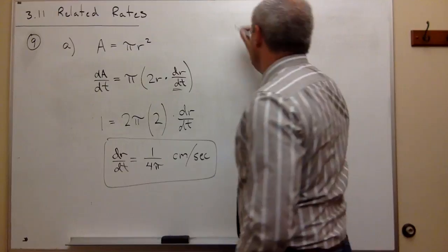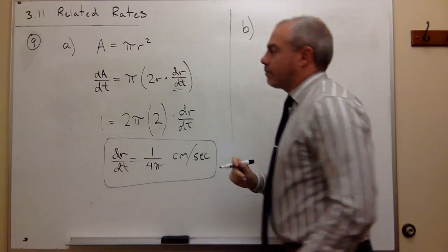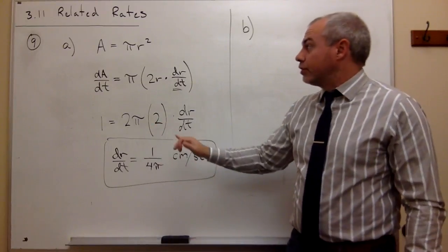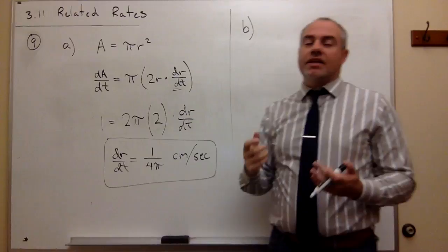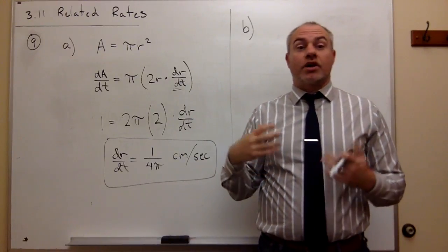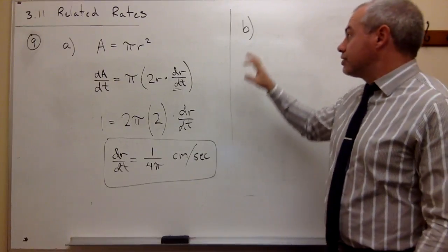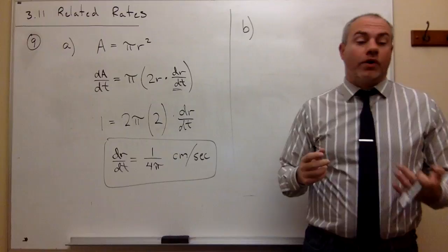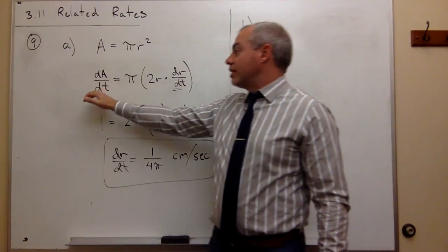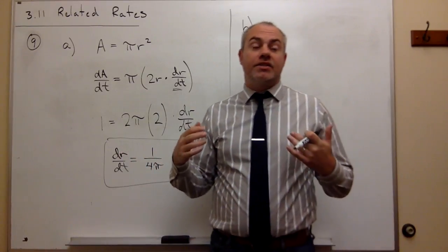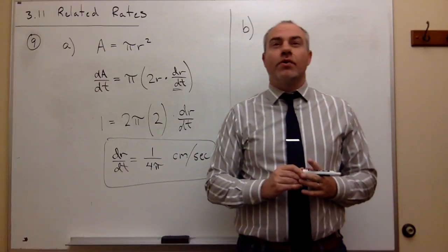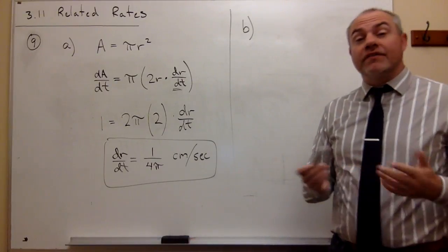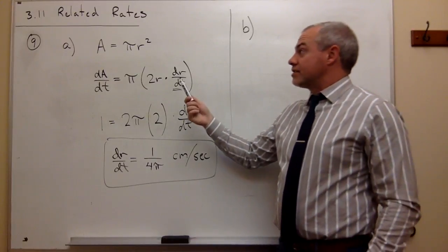For part B, the only thing that changes is instead of being given a specific radius like 2, they give us the circumference length. Using that circumference, I can figure out what the radius is, and then figure out dr/dt. In part B, the area is still changing at a rate of one, and I'm still trying to find dr/dt, but now I'm given that the circumference is two centimeters.